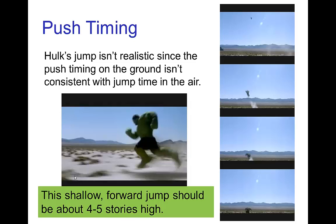If you work it out, the shallow forward jump he does in the first part of that sequence, he would jump an impressive four to five stories, but certainly not the enormous distance he jumps on screen. Now in this film, the animators were well aware of this fact, but this was a physical development decision — this was simply going to be the way physics worked for the Hulk.